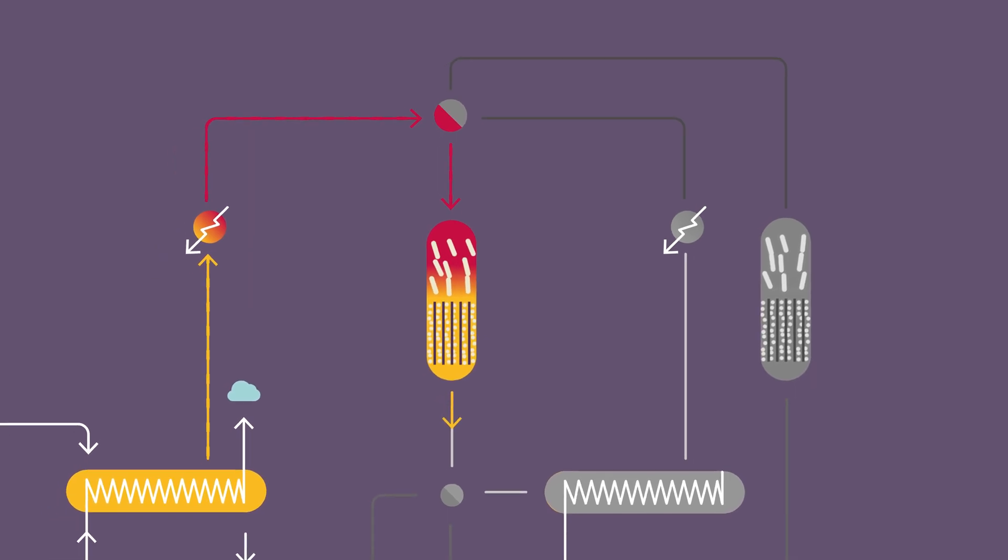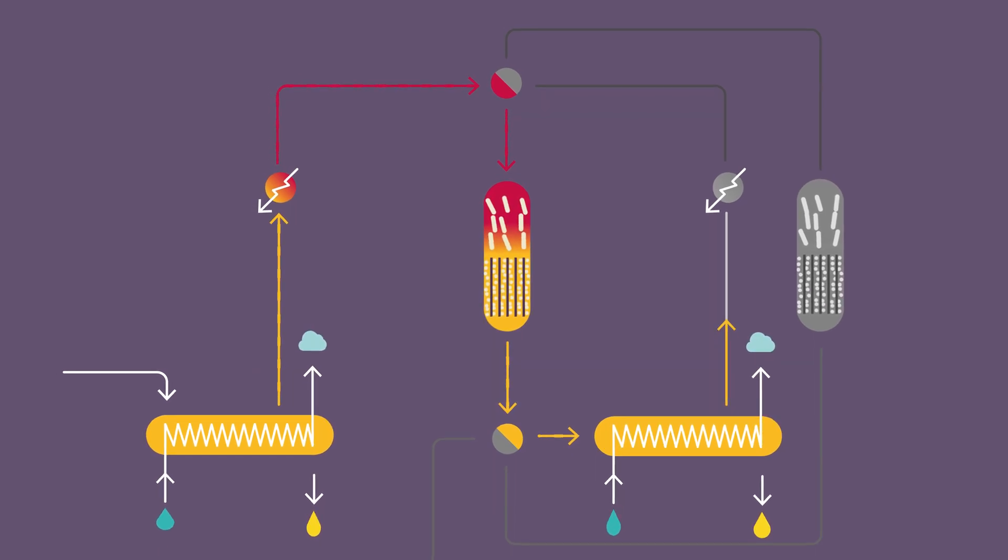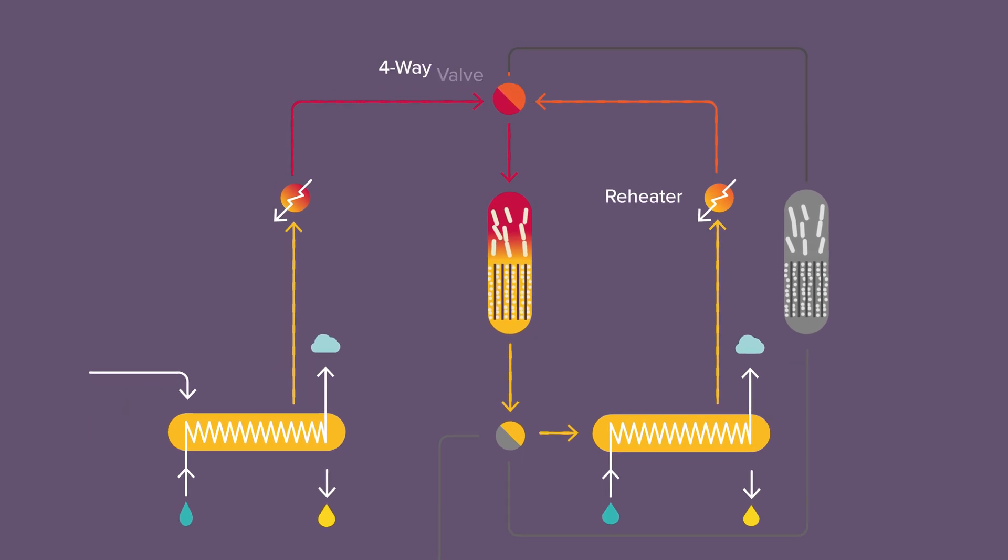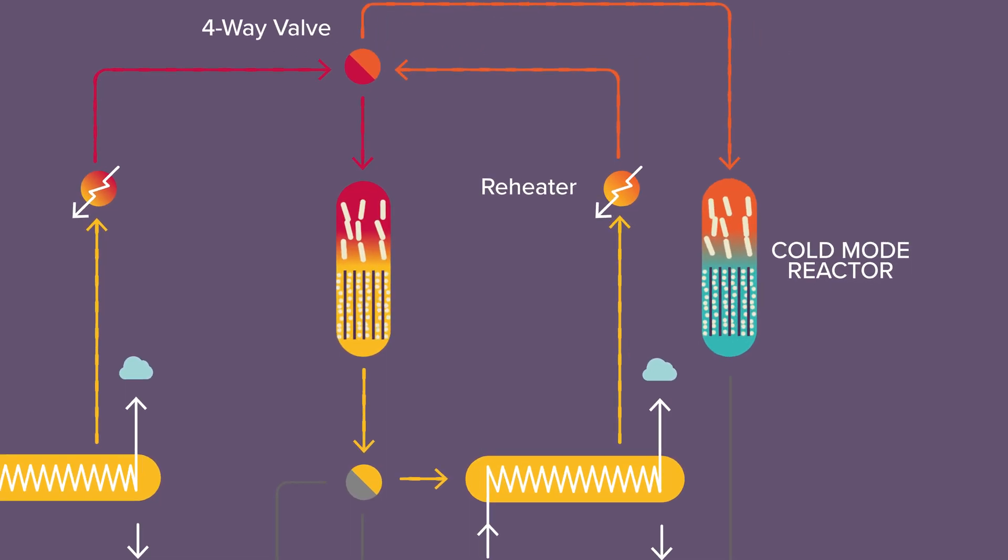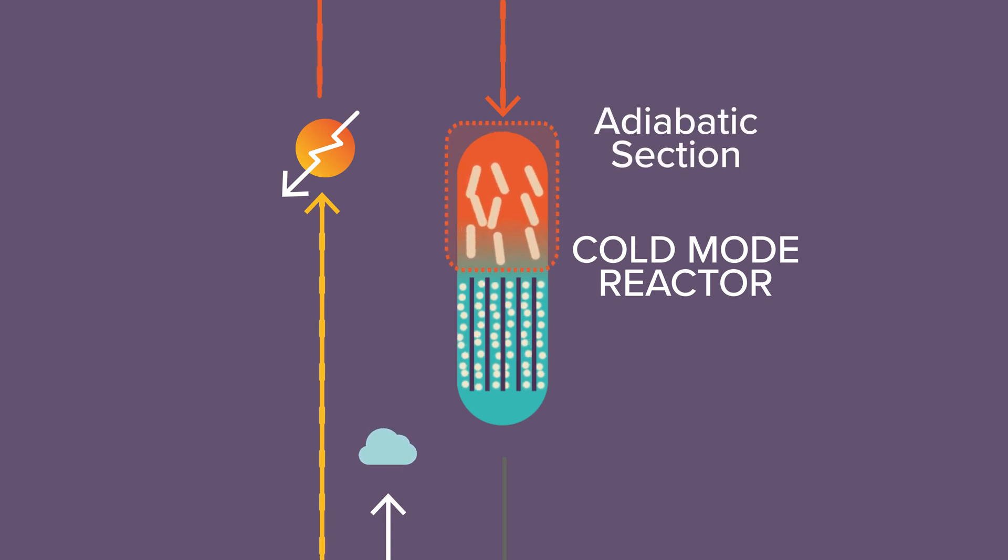The gas leaves the reactor via the second four-way valve to the second sulfur condenser, where sulfur vapor is condensed and additional steam is produced. The gas from the second sulfur condenser is reheated before entering the cold mode reactor, in order to avoid sulfur deposits on the adiabatic top section of the reactor.